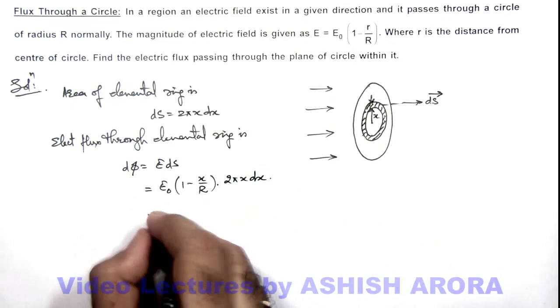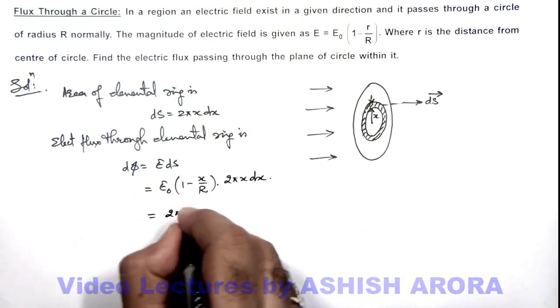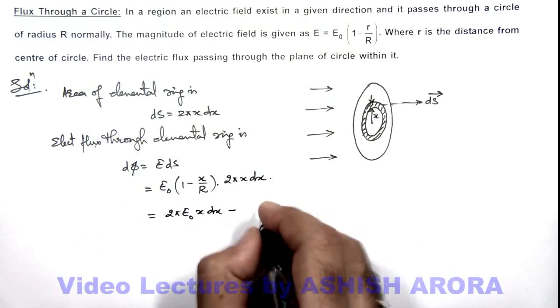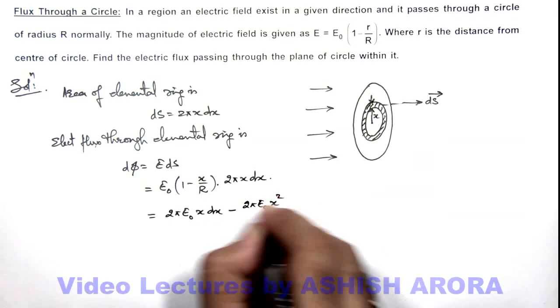Further, opening this bracket we are getting 2πE₀x dx minus 2πE₀(x²/R) dx.